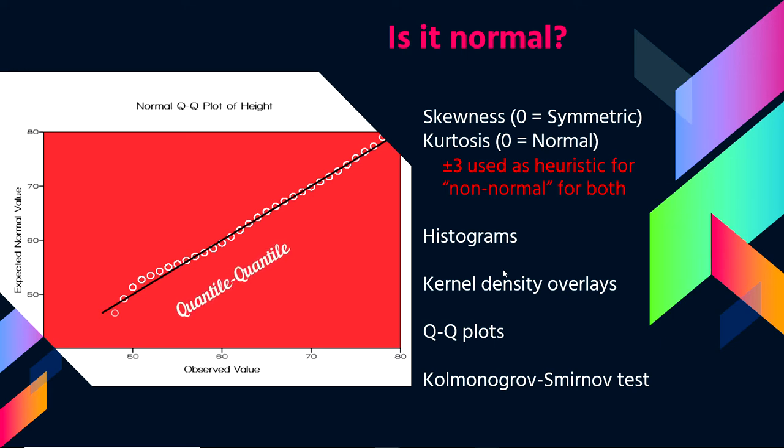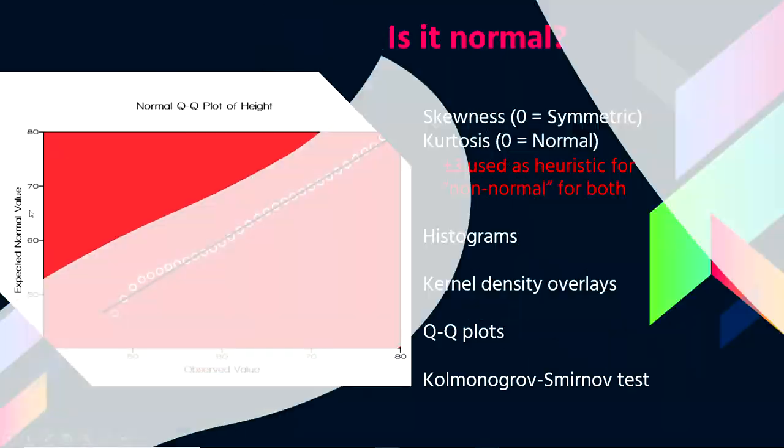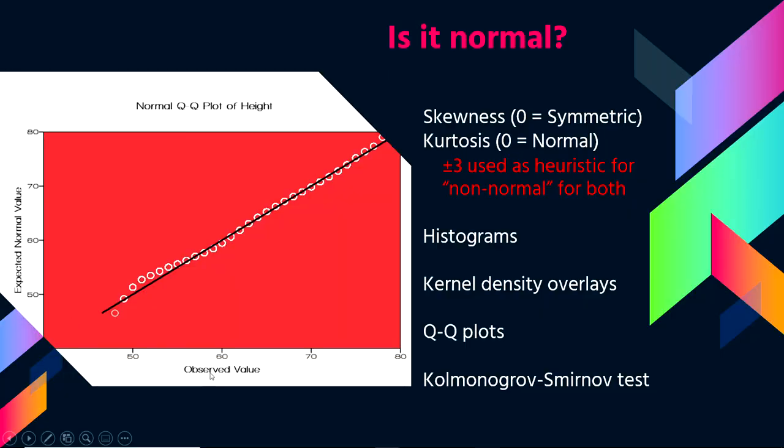You can also do what's called a QQ plot, a quantile quantile plot. It takes the expected normal value and plots it against the observed value. Essentially you get a trend line of what you would expect for the matchup of your observed values and the expected normal values. The line is what you would expect, and the dots here are what your data actually are. So the more closely these dots adhere to the line, the more normally distributed the data are. This is a nice visual way to look at it.